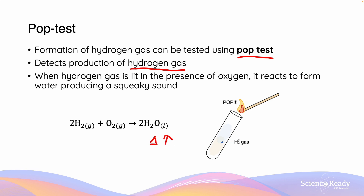When we conduct the POP test, a test tube containing the sodium metal and the alcohol will produce H₂ gas. While reacting, a thumb or a stopper of some sort will be placed on top of the test tube to prevent the hydrogen gas from escaping. After a certain period of time, when the reaction has been allowed to occur, we remove the stopper and introduce a burning splint or match to ignite the hydrogen gas.